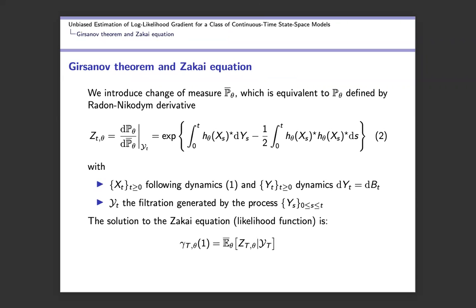To that system of stochastic differential equations, we first apply a change of measure with the Radon-Nikodym derivative as in equation 2. Under this change of measure, X_t keeps the same dynamics, while Y_t becomes simply a Brownian motion. The solution under this change of measure — the Zakai equation, which is the likelihood function of the system — is given at the bottom of the slide.